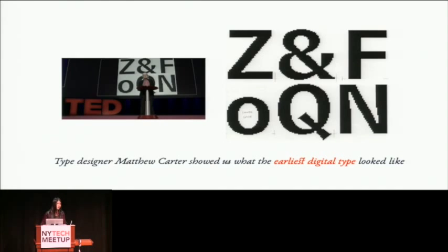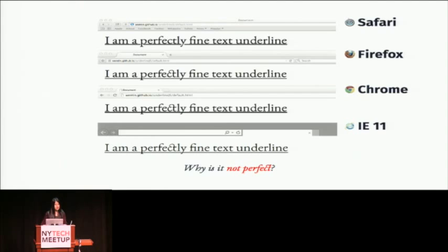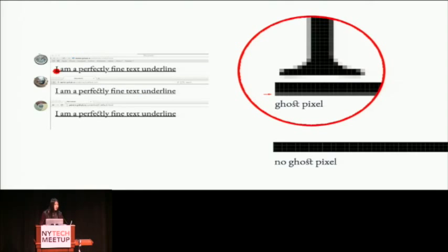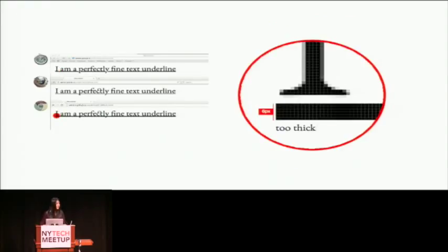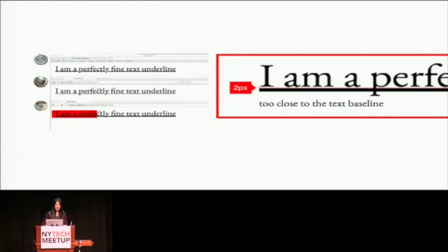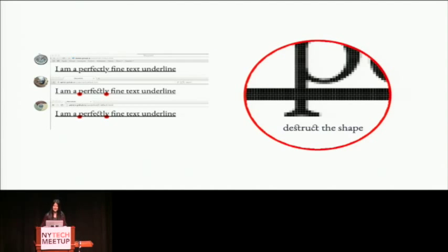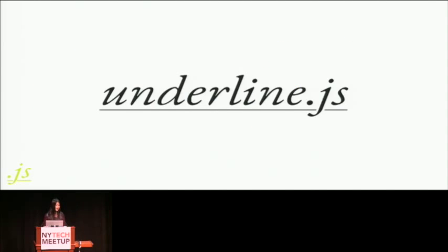That brings us back to where we are now. Why is the current underline not perfect? First, on Safari, it has ghost pixels around the edges. On Chrome, the underline is way too thick. On Chrome and Safari, it sits too close to the text baseline — it makes me and other nerds very uncomfortable. And on Firefox and Chrome, the underline goes across the descender very brutally, which distracts from the type. That's where UnderlineJS came in.